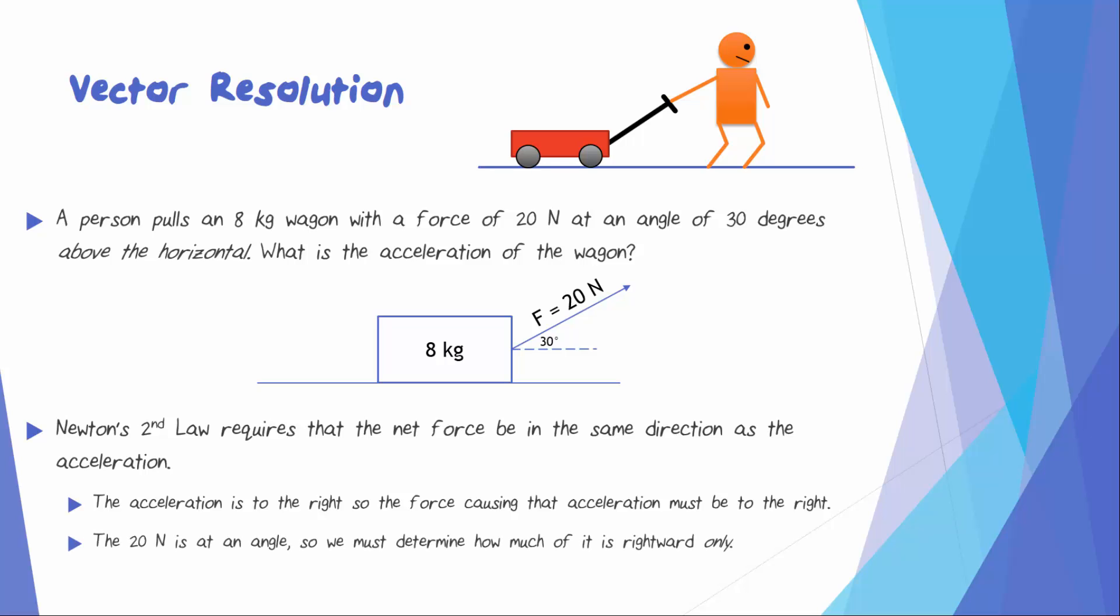But that 20 N is at an angle. So some of it is directed upward and some of it is directed to the right. We need to determine how much of it is rightward only.